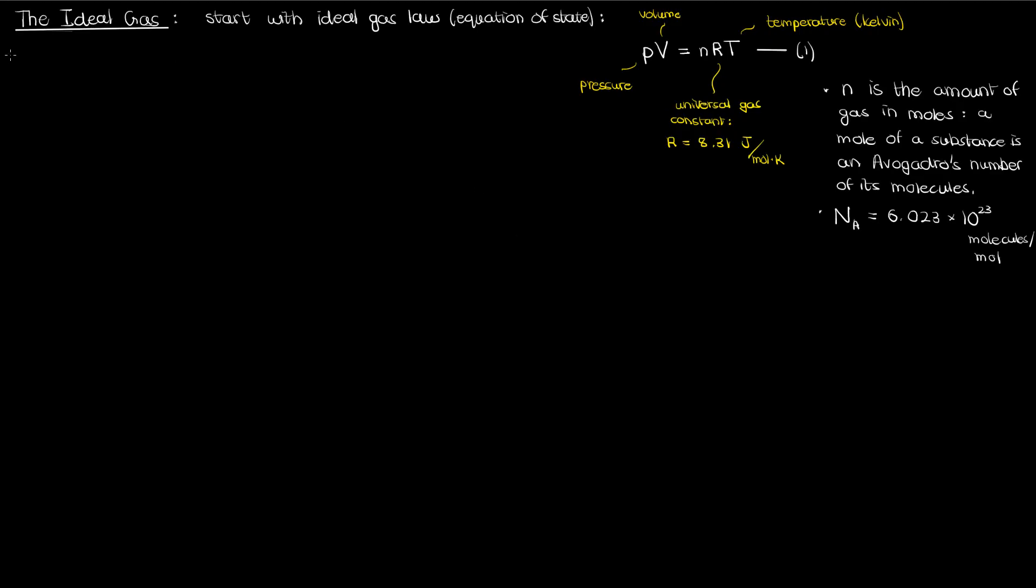Now, in statistical mechanics we'll have to really zoom in on the molecular level to see what's going on, so in this context it's helpful to rewrite the ideal gas law in terms of the number of molecules of your substance N. And because the number of moles n is basically the total number of molecules of your substance capital N divided by Avogadro's number, you can plug this into equation 1 to rewrite your ideal gas law.